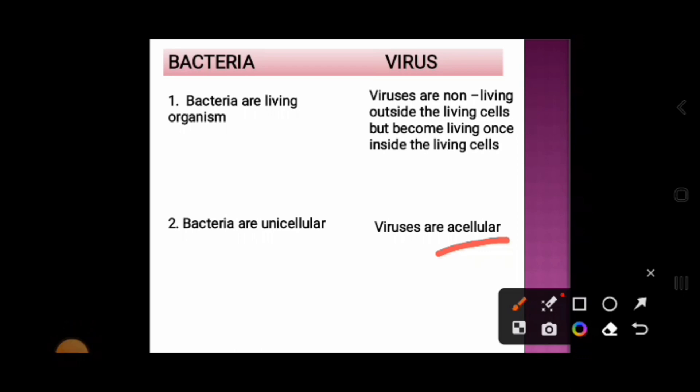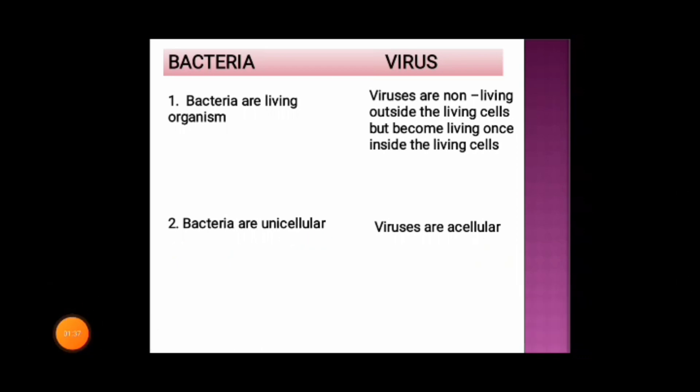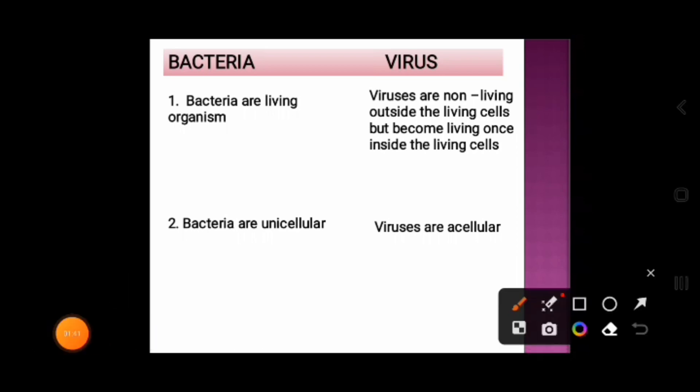Viruses lack most of the components of cells like plasma membrane, ribosomes, etc. Whereas the bacteria are cellular because they have a cellular structure and they contain most of the components like plasma membrane, ribosomes, mesosome, and other important cellular components. That's why they are cellular. And why are they unicellular? This is because they contain a single cell. That's why they are unicellular.